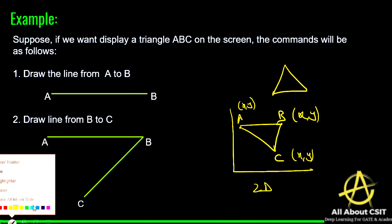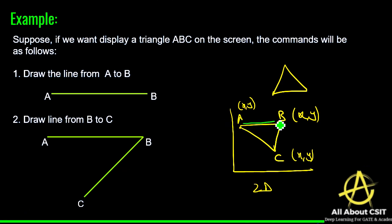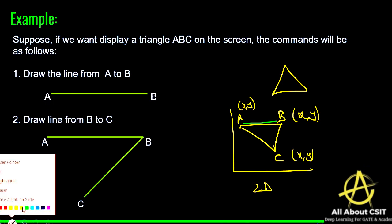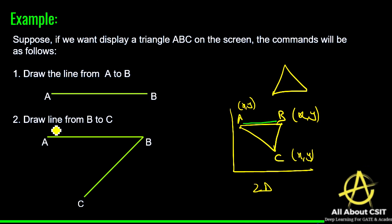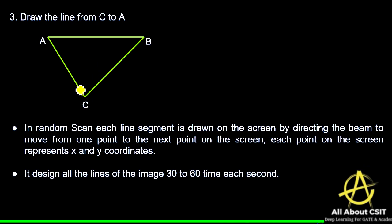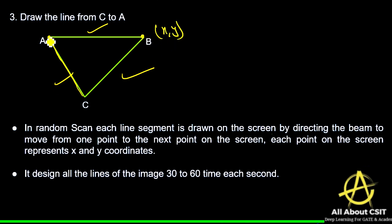First it draws the line from A to B, then from B to C, then from C to A — so your triangle appears on the screen. In random scan, each line segment is drawn on the screen by directing the beam to move from one point to the next point. Each point represents x and y coordinates: x1 y1, x2 y2, x3 y3.